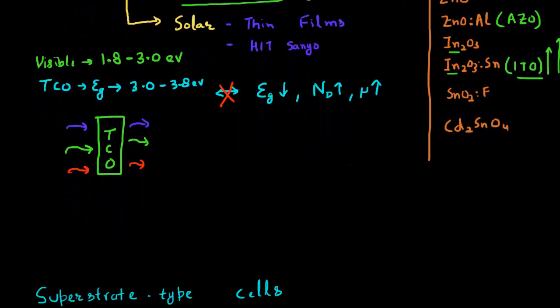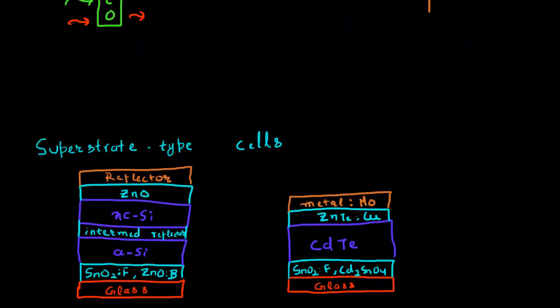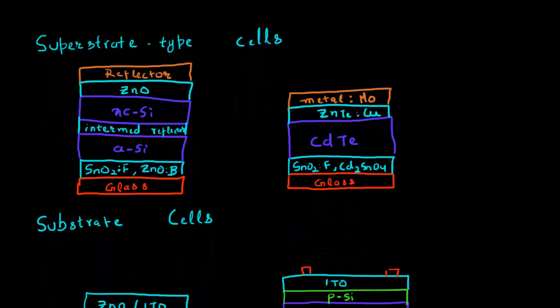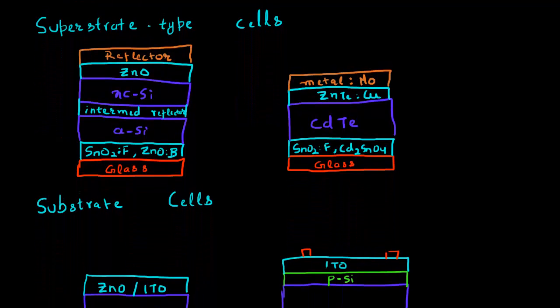Now in thin film solar cells, there are two different configurations of making these devices. I want to illustrate them to show you how the TCO is used in these thin film solar cells, where it's located, and what are some of the requirements based upon what kind of cell configuration you are using.